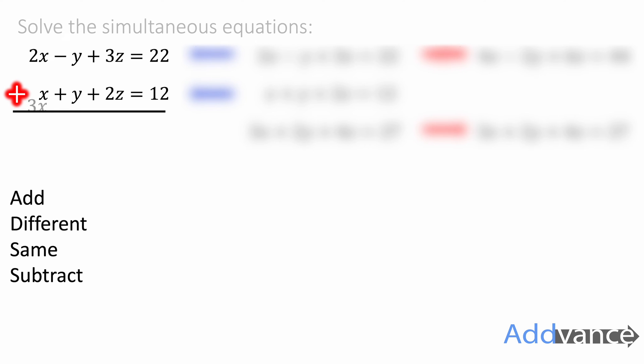And we get 2x plus x is 3x. Minus y plus y is 0. 3z plus 2z is 5z. 22 plus 12 is 34. 3x plus 5z is 34. And we've eliminated the y's. Excellent.